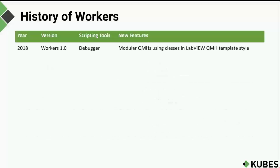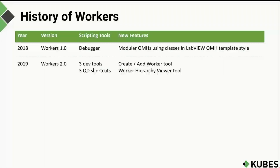The first version of Workers was released in 2018, offering a modular QMH in the style of the LabVIEW QMH template, together with an abstracted API and a single scripting tool — a debugger. In 2019, Workers version 2 added more development tools and quick-drop shortcuts, with the most useful being the Create Add Worker tool, which via scripting allowed you to create and add new workers to pre-existing workers, quickly building up an application's worker call chain hierarchy.